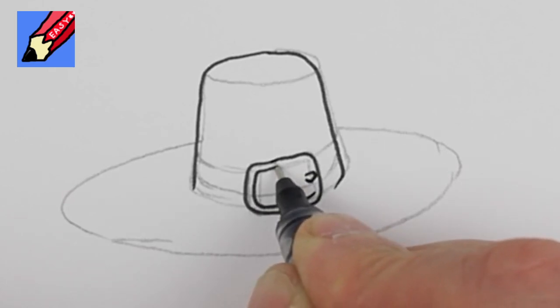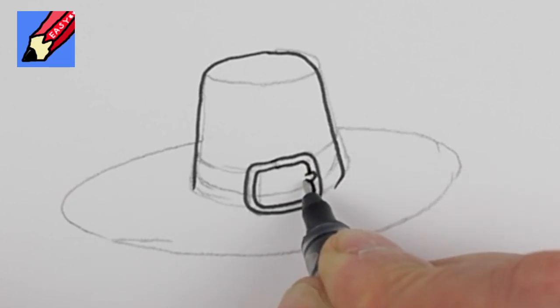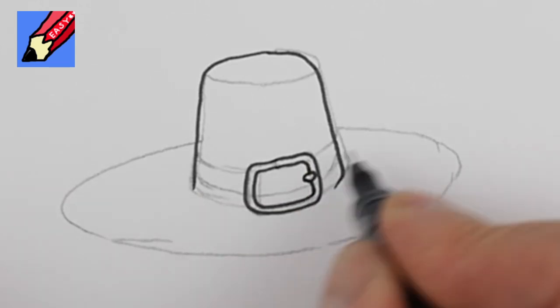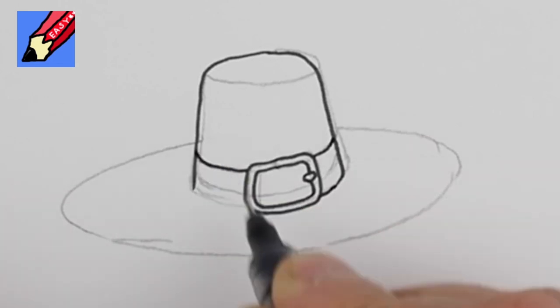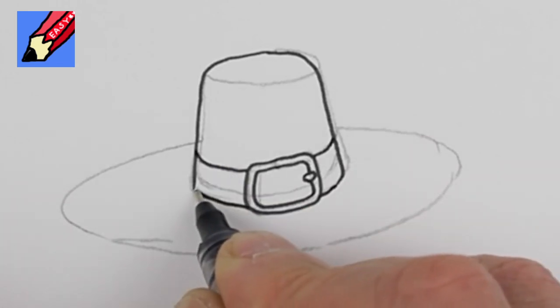You might want to put a little, I don't know what the word is for that bit on the buckle and presume there is something. Presume it has a name and then bring that up around that way up around that way. It's kind of like a belt that's wrapped around the hat.